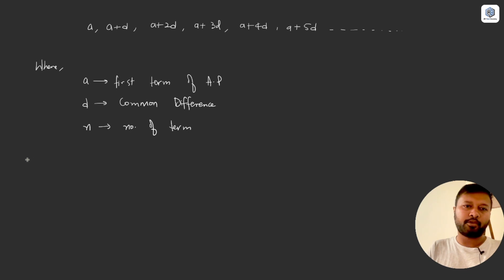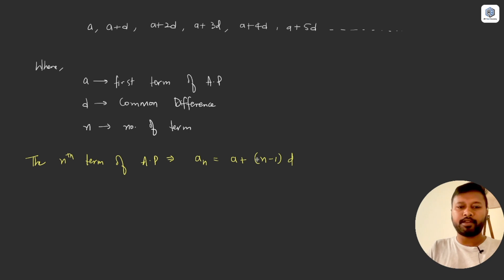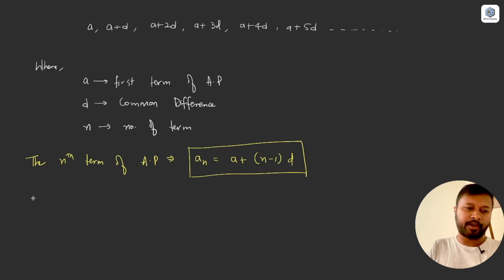To find the nth term of an AP, we use the formula: a_n = a + (n−1) × d. If they ask for the 5th term, n is 5; if they ask for the 10th term, n is 10. This is the key formula used to find any specific term in the series.